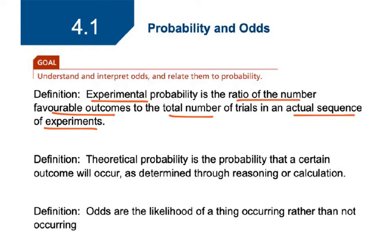Theoretical probability is a probability that a certain outcome will occur as determined through reasoning or calculation. In this case, you wouldn't actually toss the coin 100 times. You would say there are two outcomes, so 50-50 that it would happen to be heads.